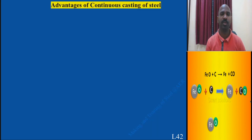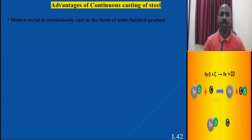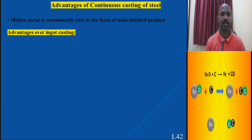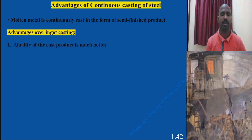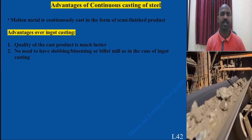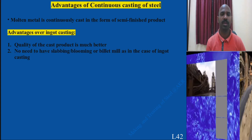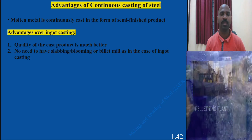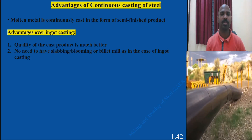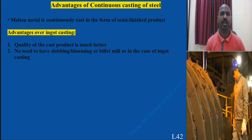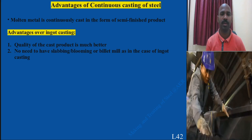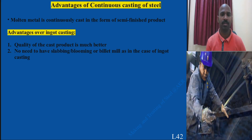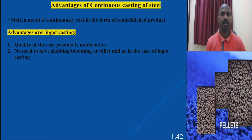The advantages of continuous casting over ingot casting include: molten metal can be fed continuously, and you directly obtain a semi-finished product of better quality. There is no need for a separate slabbing mill or blooming mill. In ingot casting, large space, high operating cost, investment, and capital costs are required. Due to these advantages, continuous casting now dominates all integrated steel plants.